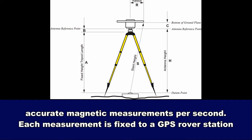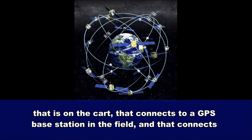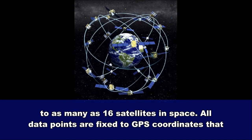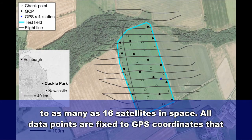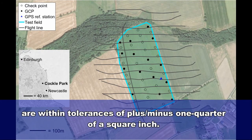Each measurement is fixed to a GPS rover station that is on the cart, that connects to a GPS base station in the field, and that connects to as many as 16 satellites in space. All data points are fixed to GPS coordinates that are within tolerances of plus or minus one quarter of an inch.